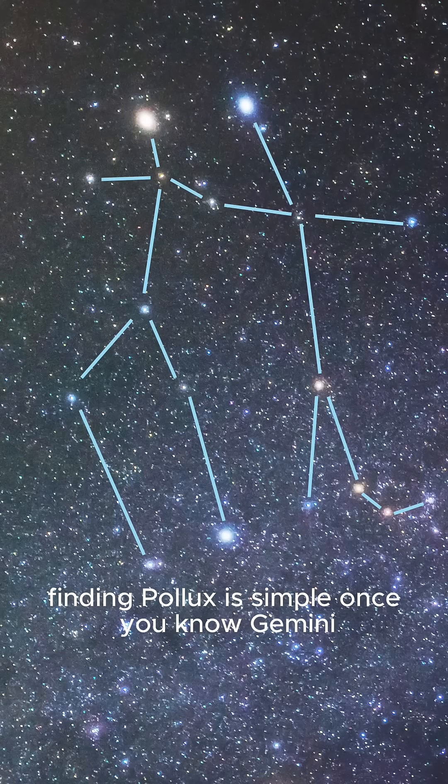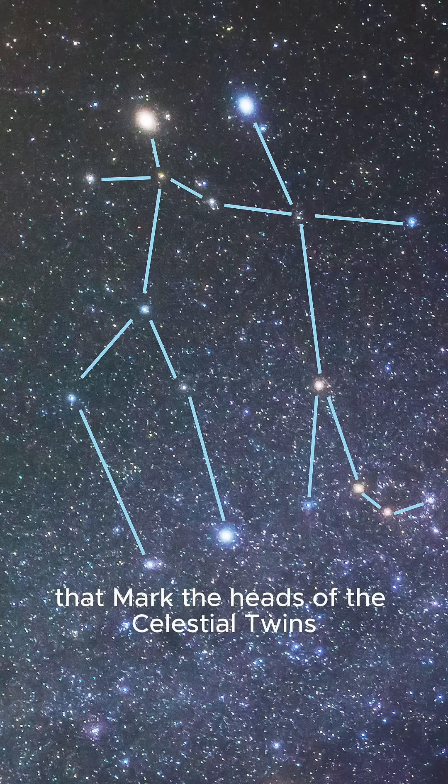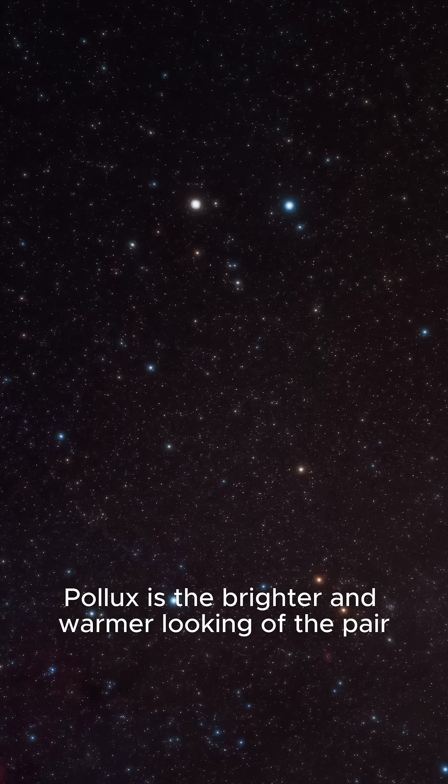Finding Pollux is simple once you know Gemini. Look for the two bright stars that mark the heads of the celestial twins. Castor on one side and Pollux on the other. Pollux is the brighter and warmer looking of the pair.